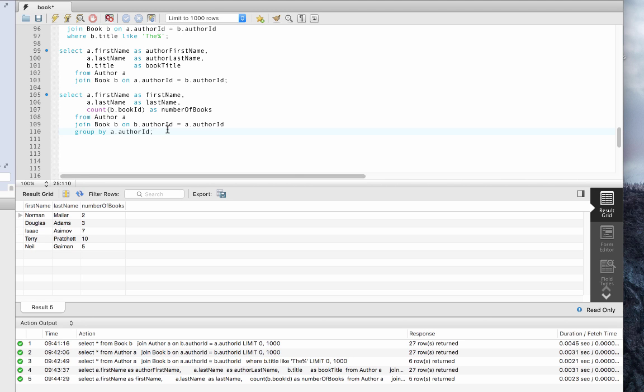We can also use aggregates and group by clauses on the joined results. In this example, we've used a count aggregate to count the number of book IDs for all authors. This gives us a count of the number of book records for each author. Note that two authors, Frank Herbert and Orson Scott Card, do not appear in these results, because they have no book records in the book table. We'll now examine a different type of join that allows us to capture such records.